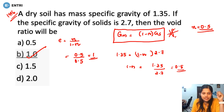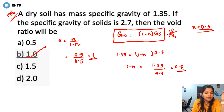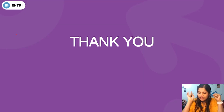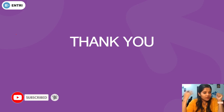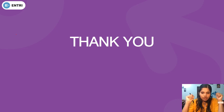Option B — void ratio 1 — is the correct answer. The key relationship is Gm equals (1 minus N) into Gs. We have discussed this relationship for compacted soil. We will discuss more questions in the coming video and complete the preparation with maximum questions. We have two different videos for Geotechnical. Thank you.